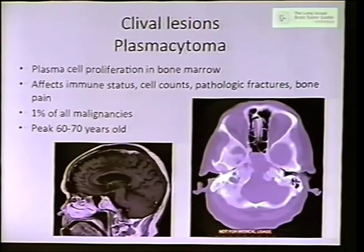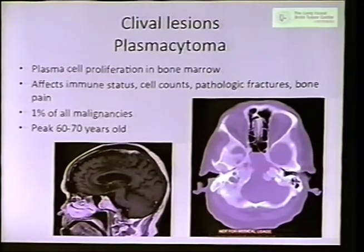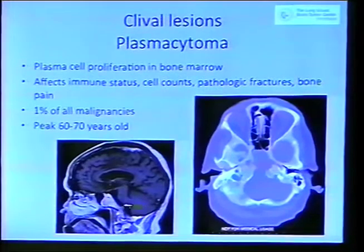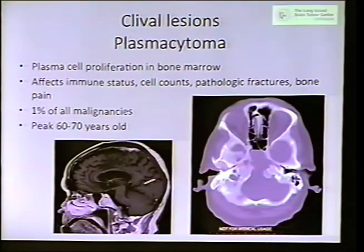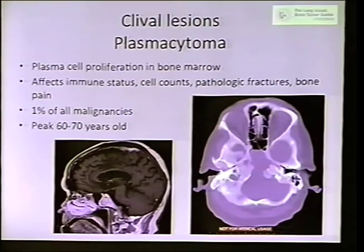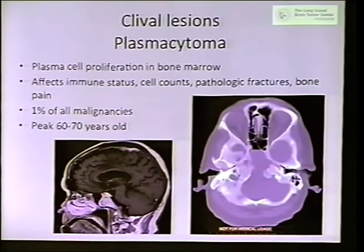The area we've concentrated on here to start with has been the clivus. The majority of initial cases here have been clival region, because there's really no danger of the complications associated with transsphenoidal surgery going through the nose. The clivus is in the bone itself — not in the sella or suprasellar region — and tumors can eat away at the bone. These can be plasmacytoma, a form of multiple myeloma, metastases from prostate or breast cancer, or squamous cell carcinoma extending from the sinuses.